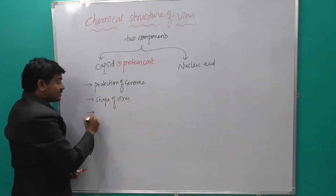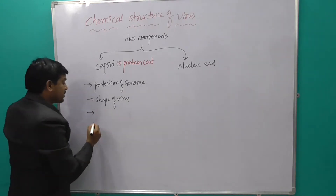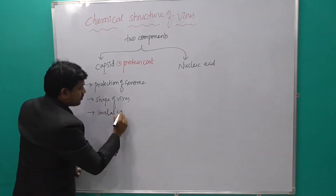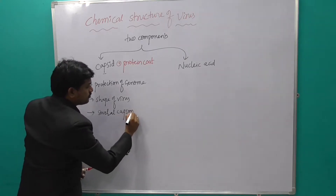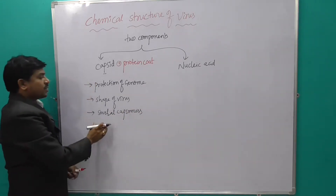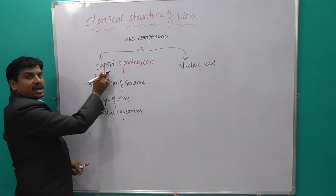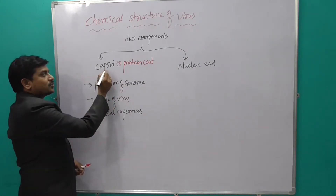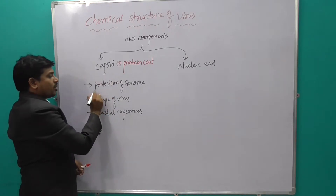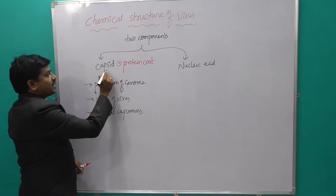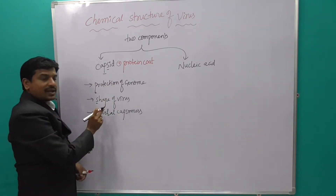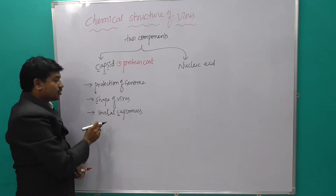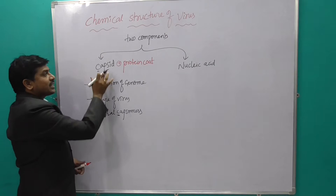The capsid consists of several capsomeres. The capsule is helpful for protection of the genome and for the shape of the virus — 'P' means protection, 'S' means shape of the virus. The capsid is composed of several capsomeres.